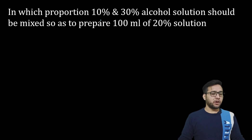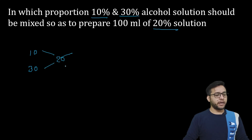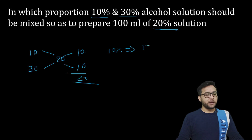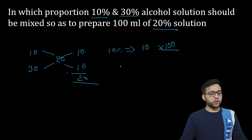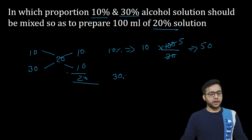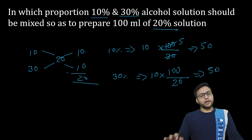इसी तरीके से तीसरा question भी solve करना है — यहाँ पर percentage change कर दी गई है। यहाँ पर 10% और 30% दे दिया गया है, requirement है 20% की — तो 20 हम center में लिखेंगे। Solve करेंगे, minus करके 10 आएगा, यहाँ पर भी 10 आएगा। 10% और 30% का calculation same रहेगा।